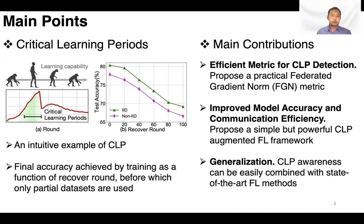CLP refers to crucial stages during training where even small errors can have a lasting impact on the final test accuracy. The objective of Critical FL is to improve FL performance by guiding client selection based on CLP awareness.